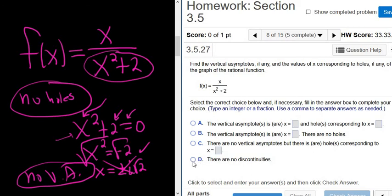So it would be this one here. There are no discontinuities. You might say, what's a discontinuity? Well, a discontinuity is either a hole or a vertical asymptote.